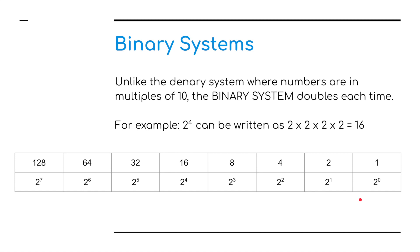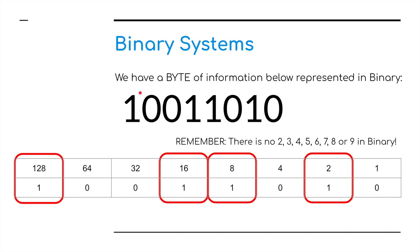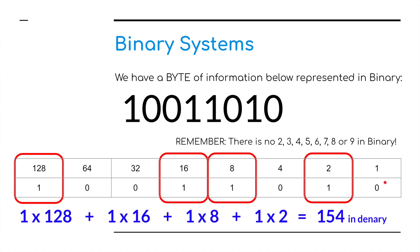Now, in a binary system, the place values go up in times two — not times ten — times two. So two to the zero is one, then two, four, eight, sixteen, thirty-two, and to get to a byte of information: one hundred and twenty-eight. Let's look at this number here: 1, 0, 0, 1, 1, 0, 1, 0. That's one lot of one hundred and twenty-eight, one lot of sixteen, one lot of eight — no lots of sixty-four or thirty-two — and two lots of ones. If we add all those together, we get a binary value of one hundred and fifty-four.